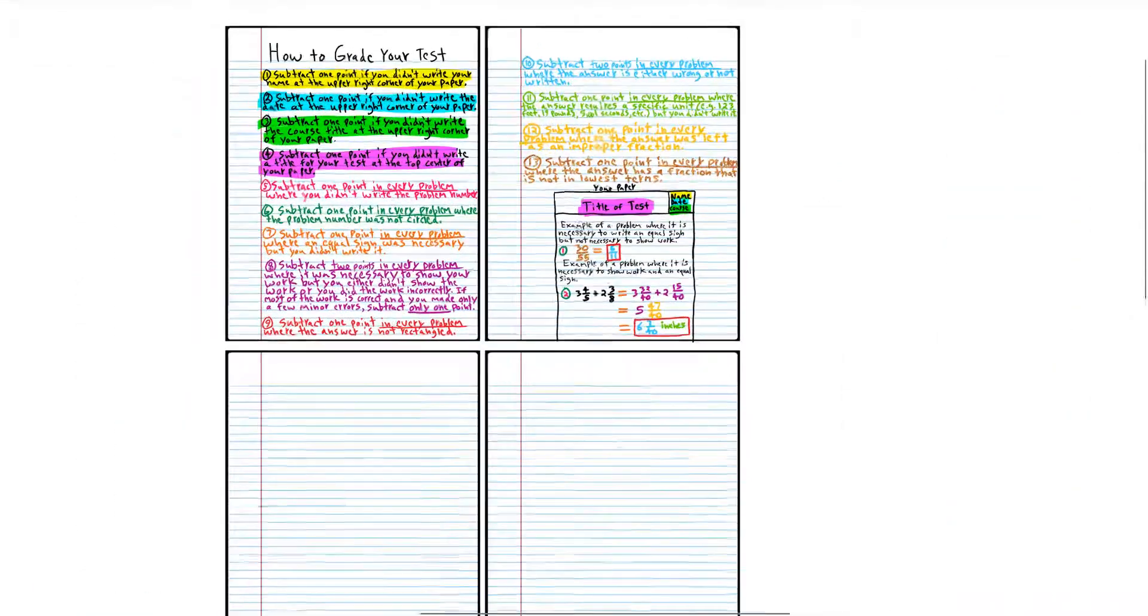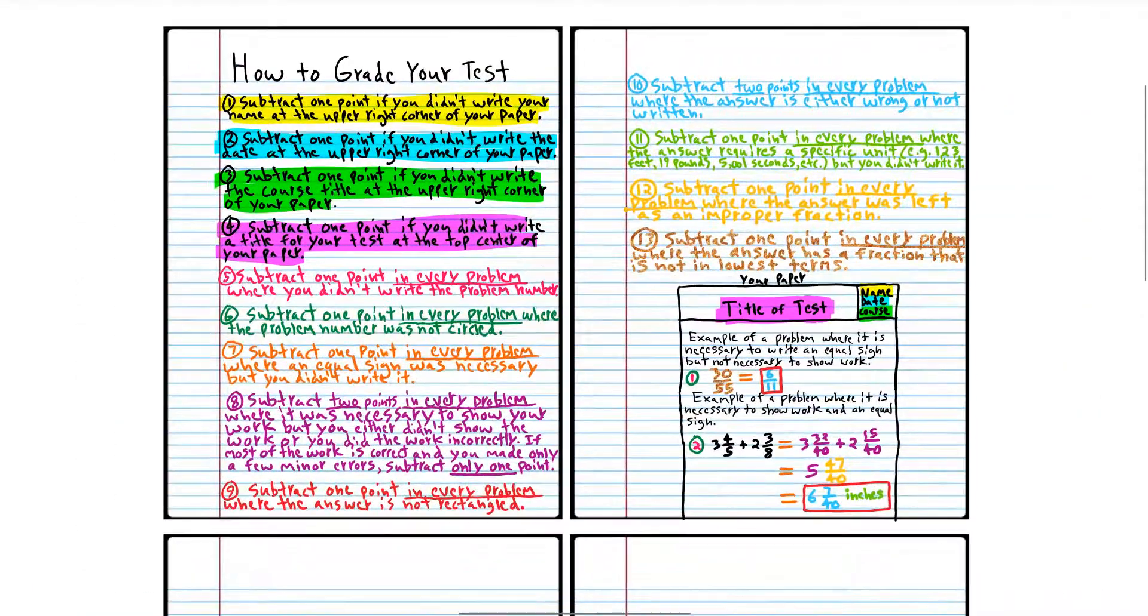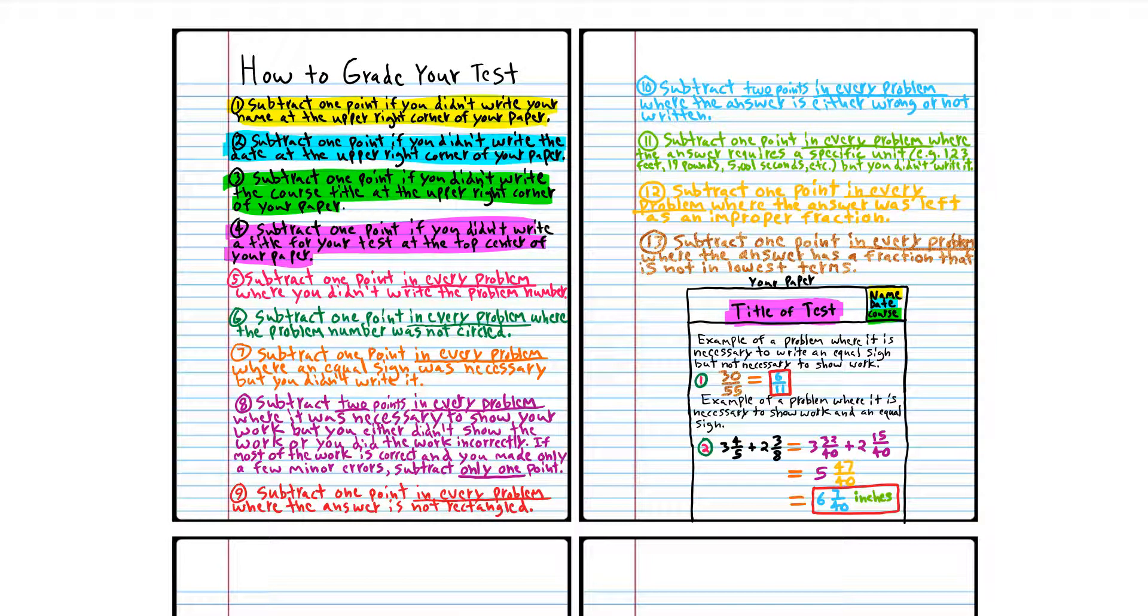And if you scored a 90 to 100, that means you know the material really well. An 80 to an 89 means that you know the material pretty well. If you scored a 70 to a 79, that means you know the material, but you have some issues that you need to work on. And if you scored lower than a 70, that means you don't know the material. And most likely, you just didn't study for the test.